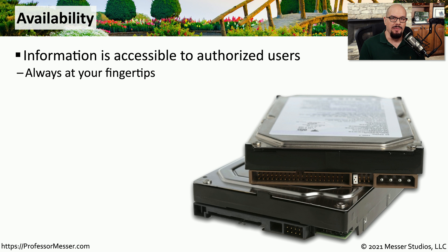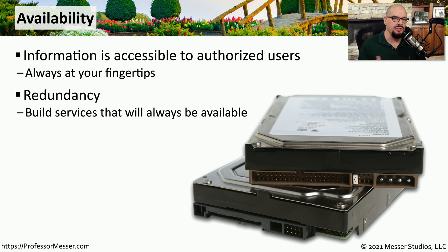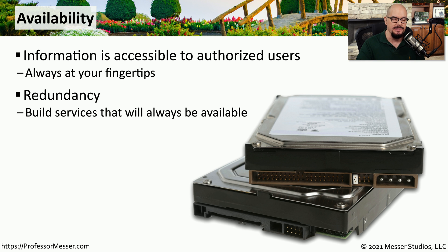Availability is probably one of the most well-known and expected legs of the CIA triad because we always want to have our systems and networks up and running. This means that we would use some type of redundancy to ensure that these systems would remain available. For example, we might want to have redundant firewalls — if one firewall was to fail, we have another firewall that we could install to provide this redundancy.